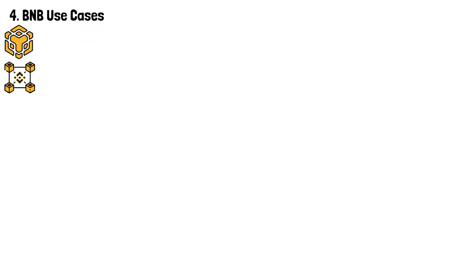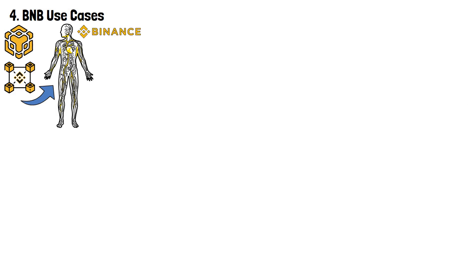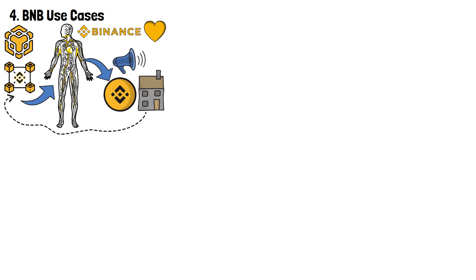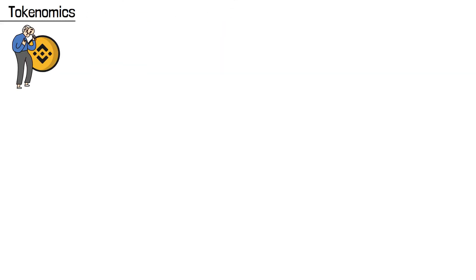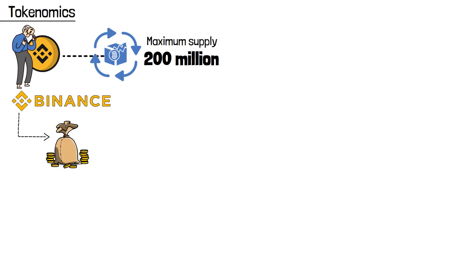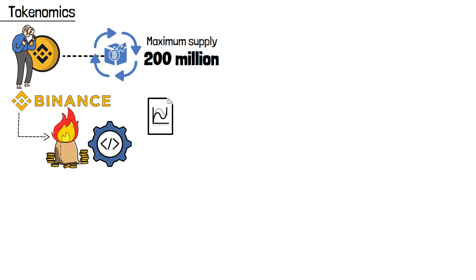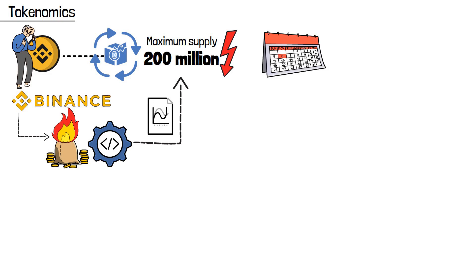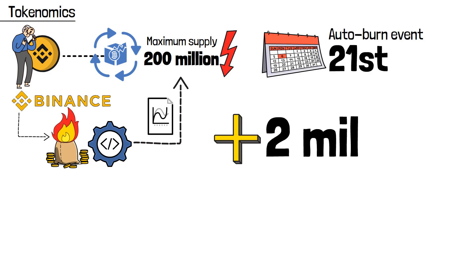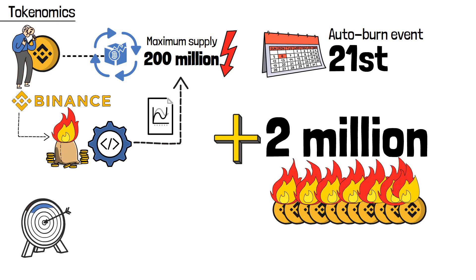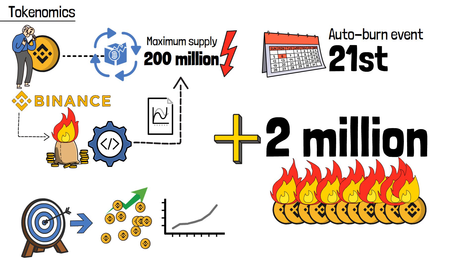You could see the Binance Smart Chain and the BNB Chain as arteries and veins that keep the Binance organism alive. And what's the analog for this organism's blood cells? Of course, BNB, the Binance Coin. BNB has carefully managed token supply, with a maximum supply of 200 million tokens. Binance employs a coin burning mechanism designed to systematically reduce the overall BNB coin count. In the most recent 21st quarterly auto burn event, Binance eliminated more than 2 million BNB coins from circulation — a strategic measure aimed at enhancing scarcity and potential value appreciation of the remaining tokens.